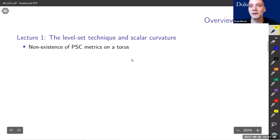Today in my first talk, we're going to get started with an introduction of the level set technique, and I do so by giving a simple and elementary proof of the non-existence of a metric of positive scalar curvature on a torus.